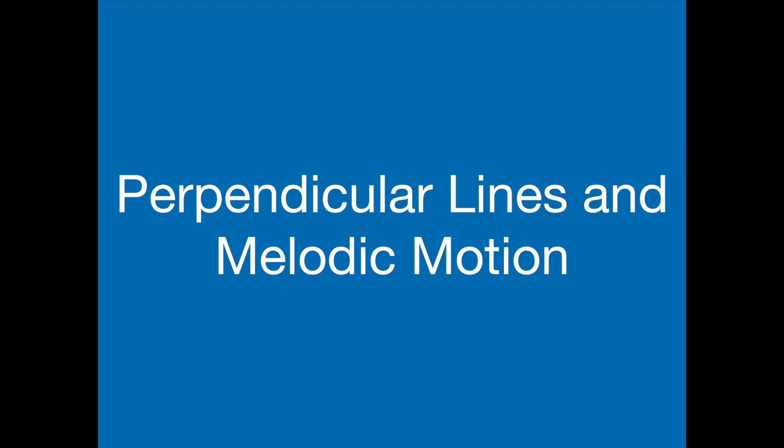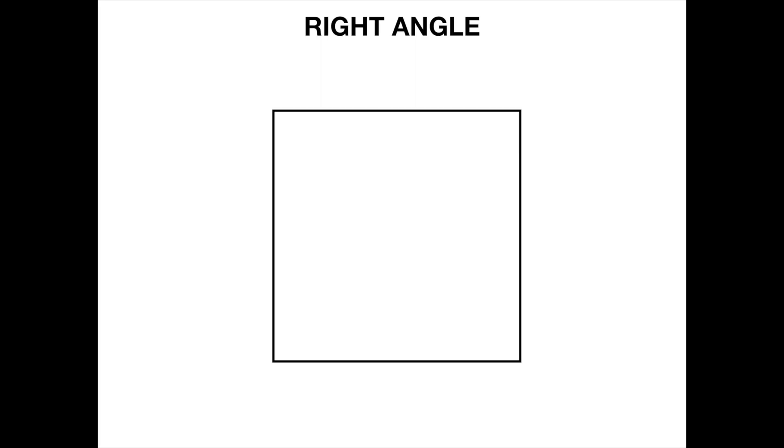Our third type of lines are perpendicular. Perpendicular lines also move away from each other, but they maintain a right angle. So what's a right angle? Well, the best way to learn about right angles is with a square.